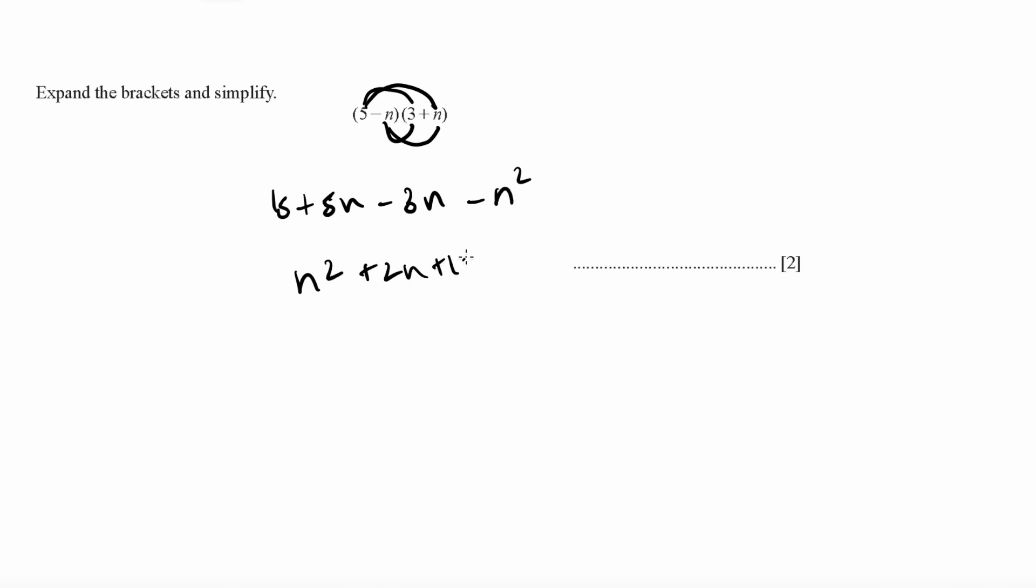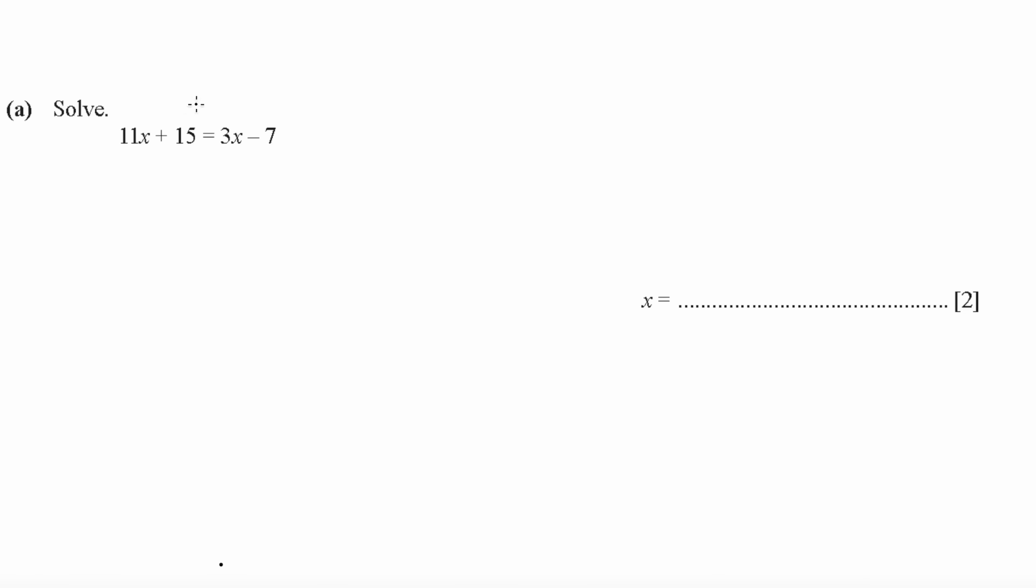For equations like this, you put both x's on one side and the whole numbers on the other side. So 11x minus 3x is equal to minus 7 minus 15, giving us 8x equals minus 22. x equals minus 22 over 8, giving us negative 2.75 as x.